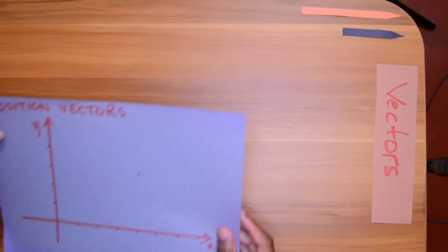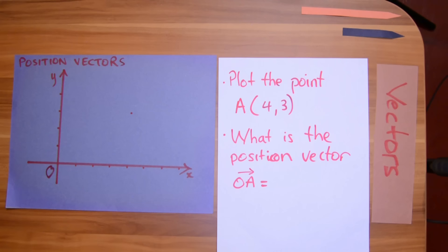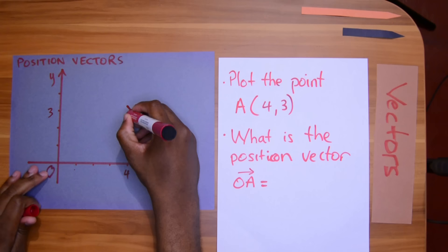Let me introduce one last concept about vectors and we'll end this video. Position vectors. These are vectors that start at the origin. Origin is represented by O. So for example, if I'm told to plot the point A(4, 3), that will be 1, 2, 3, 4, 1, 2, 3, and I'm told to plot this point, it's going to be here. That's point A.